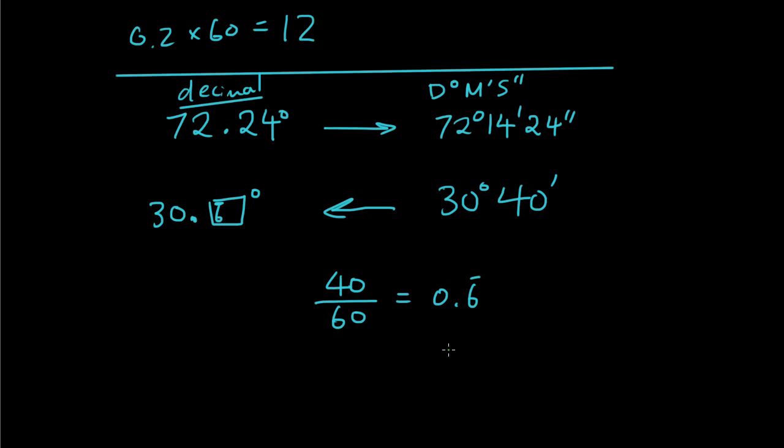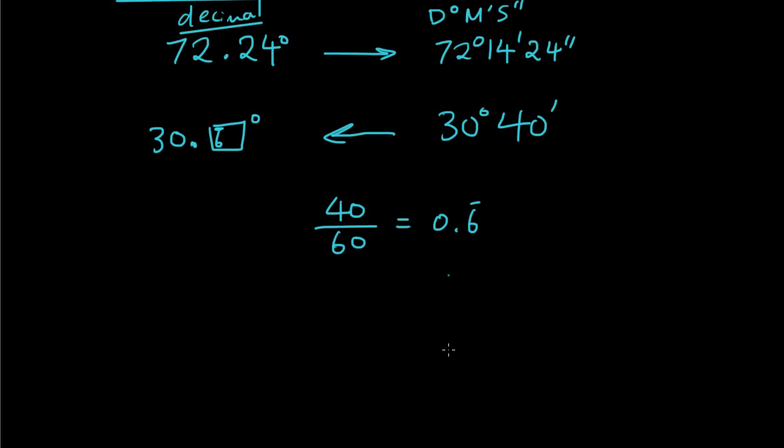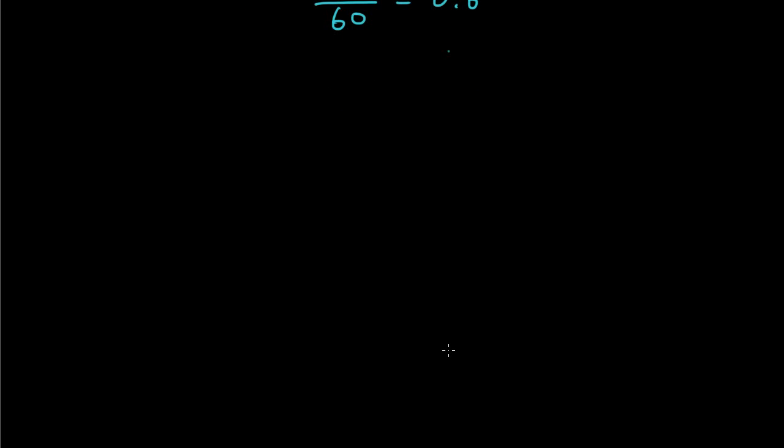I hope this has helped you guys understand degrees, minutes and seconds. Let's just do a quick trigonometry problem that involves this. So let's give you a right angle triangle. And instead of giving you the angle in straight decimals, I'll give it to you in degrees, minutes, seconds. So 20 degrees, 14 minutes.